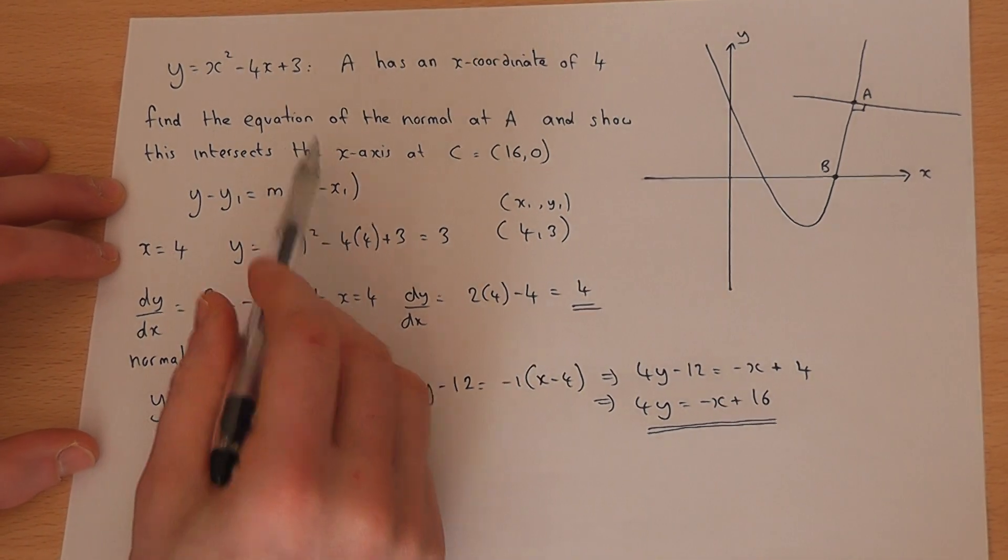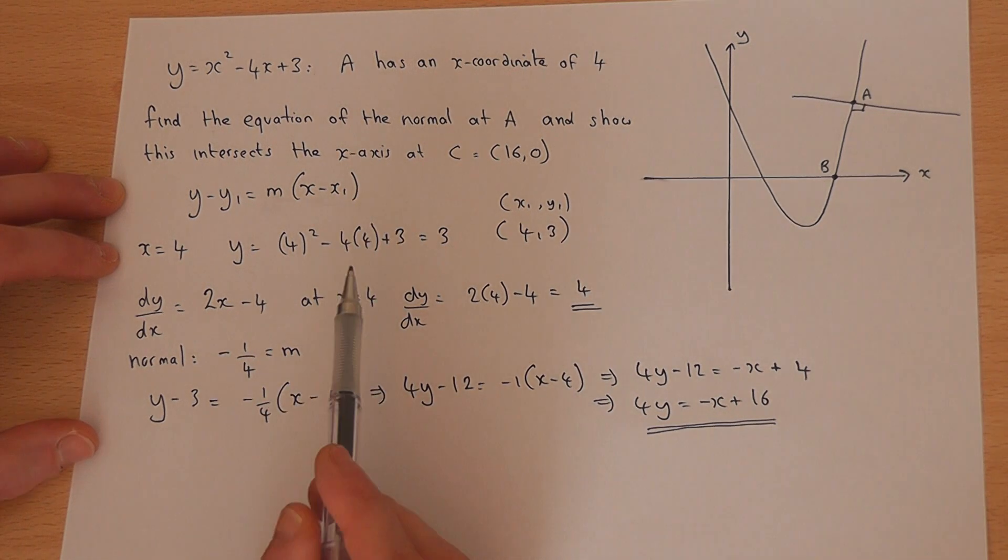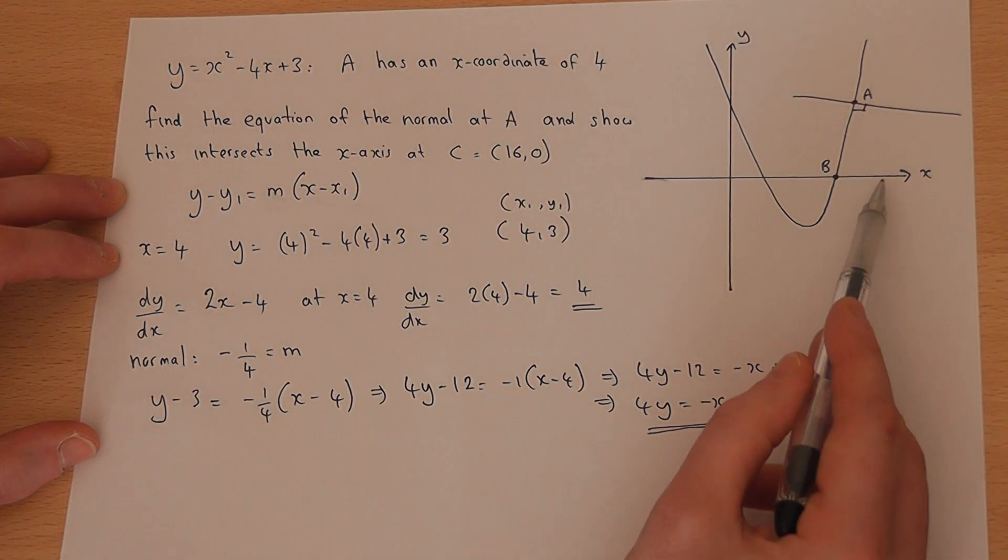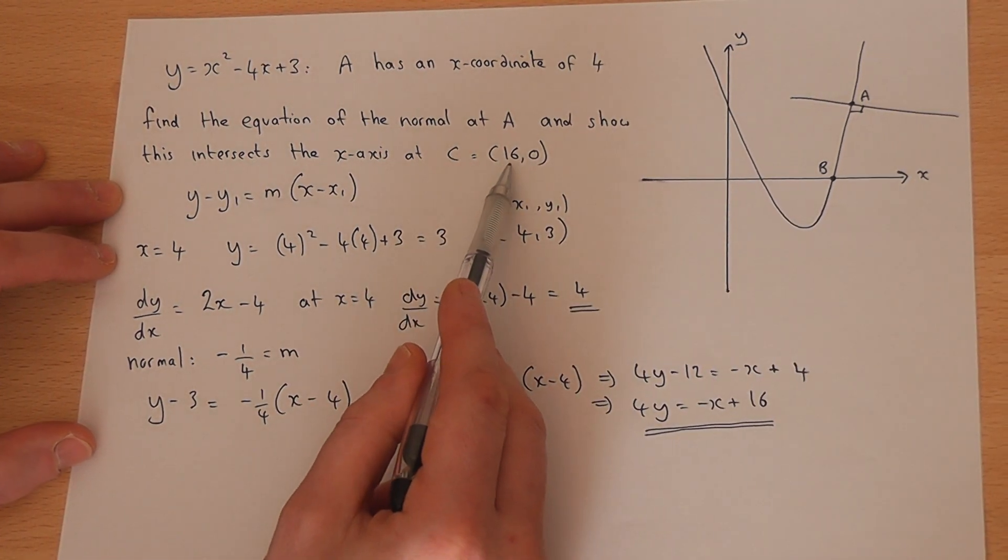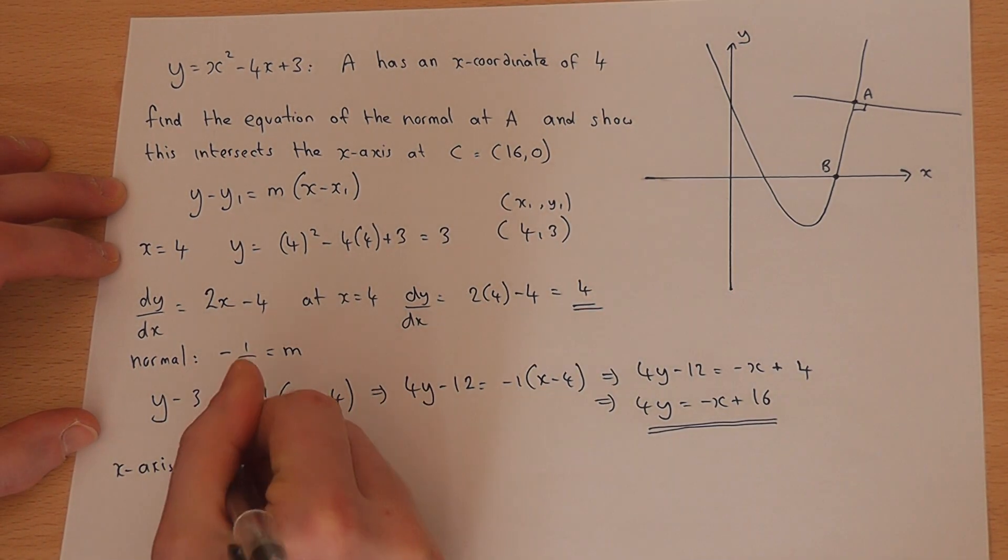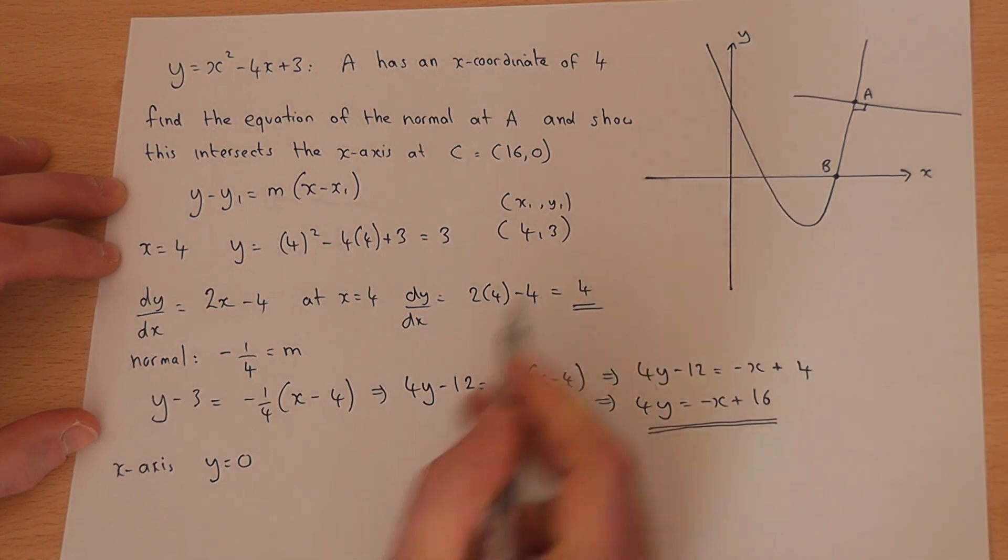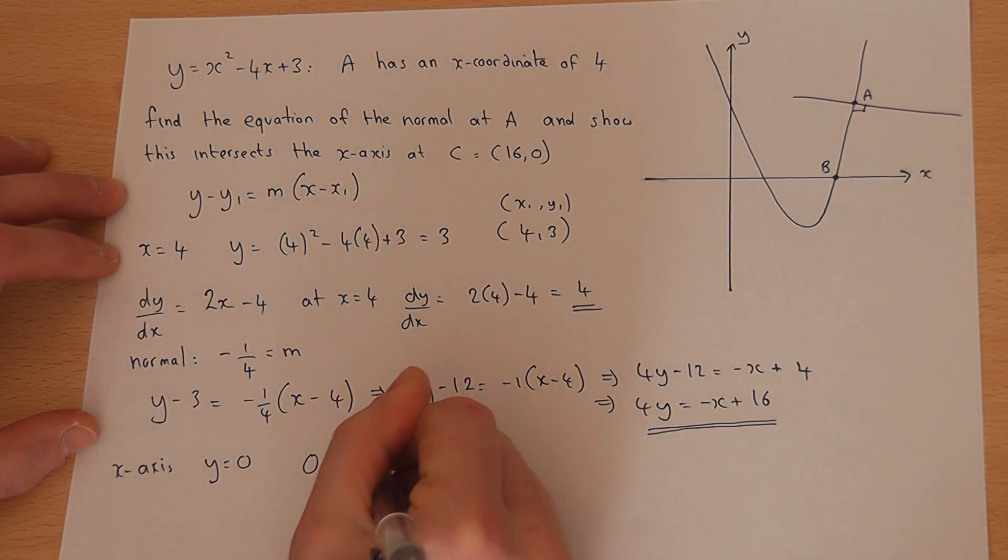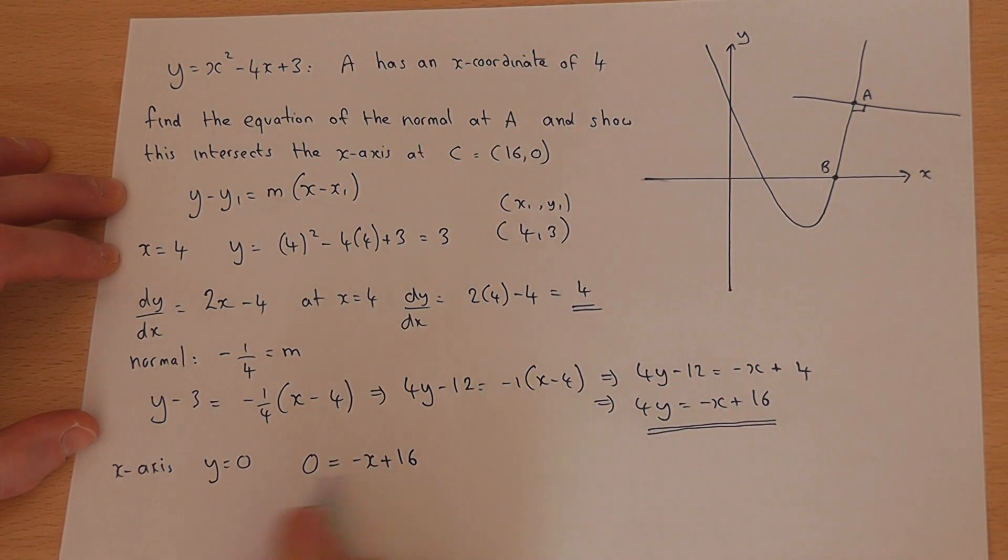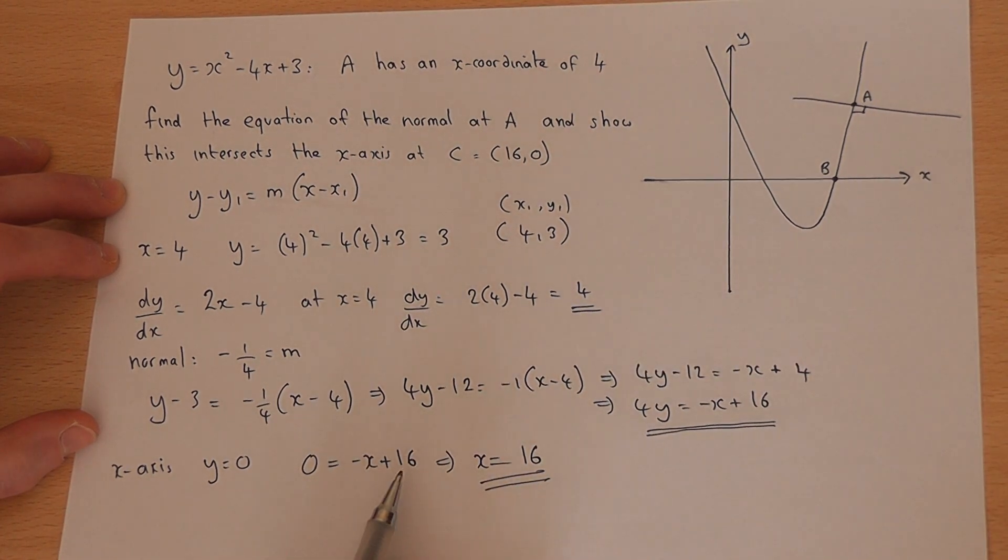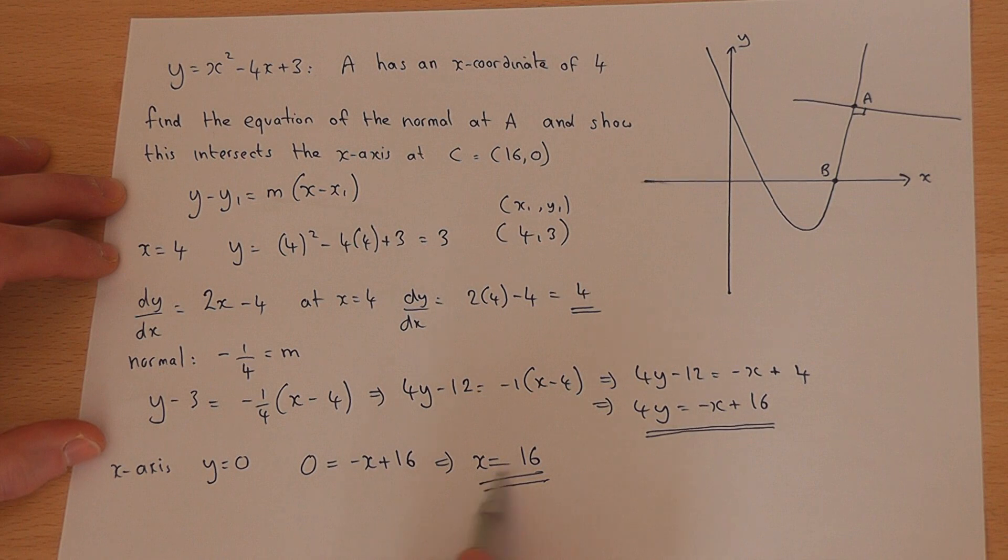We've found the equation of the normal at point A. We're then asked to show that this line intersects the x-axis at x = 16. The x-axis is where y = 0, so letting y = 0: 0 = -x + 16. Rearranging: x = 16. The line intersects the x-axis at x = 16 as required.